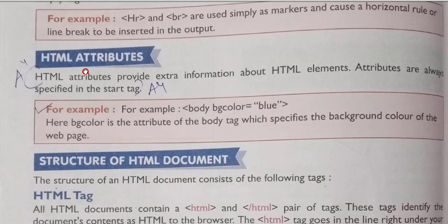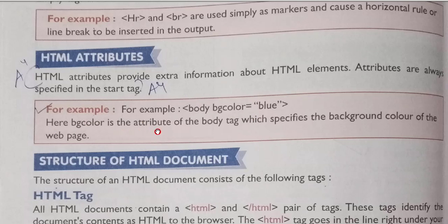Next, HTML attributes. HTML attributes provide extra information about HTML elements. Attributes are always specified in the start tag. Attributes help you define the properties of a tag. For example, the body tag with the attribute bgcolor set to 'blue' changes the background color of the whole page. So 'body' is the tag and 'bgcolor' is the attribute, which specifies the background color of the web page.